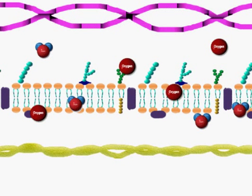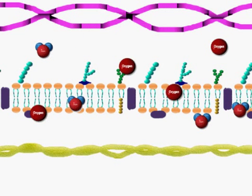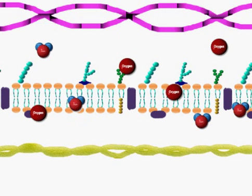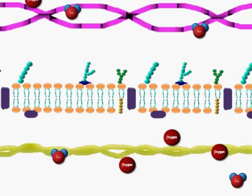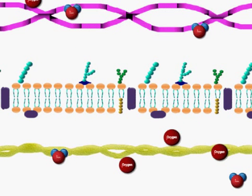Passive transport, as the name implies, requires no energy. Here we see oxygen and water moving in and out of the cell membrane. This is passive because no work is done by the cell membrane. Things are just flowing in and out.